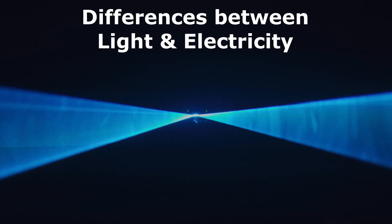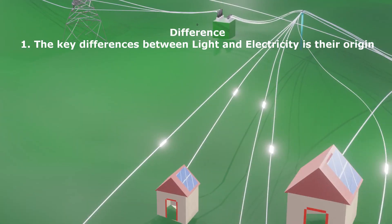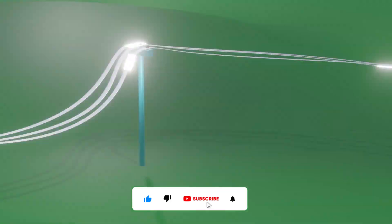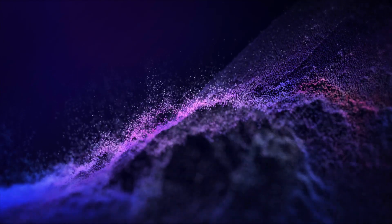Now, let's dive into the differences between light and electricity. One of the key differences between light and electricity is their origin. Electricity is produced by the flow of charged particles, while light is produced by the vibration of electrically charged particles.